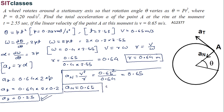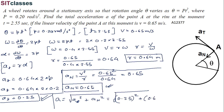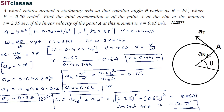Now we have both a_tangential and a_normal, so the total acceleration = √(a_t² + a_n²) = √(0.25² + 0.65²) = √0.485 ≈ 0.7 m/s². So the total acceleration A = 0.7 m/s². This is the final answer for this given problem.